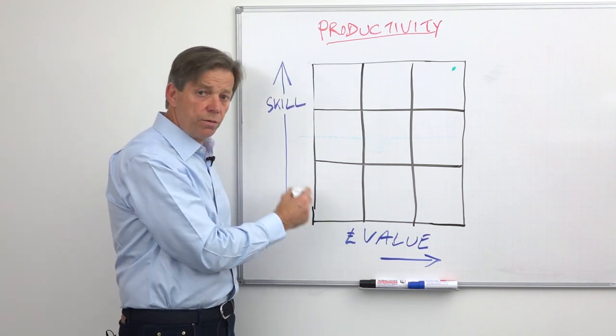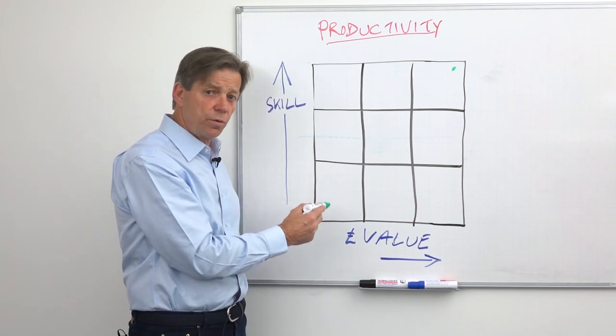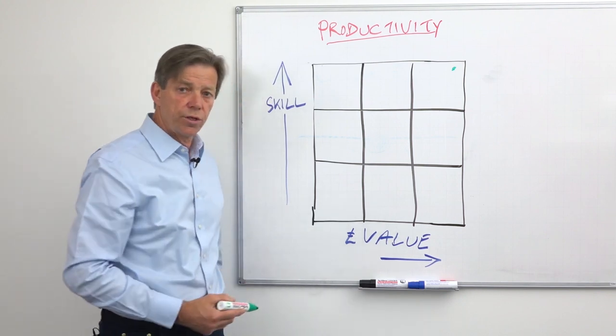In the bottom corner though, low skill, low value stuff, this is where as far as possible automation and/or low cost labor should be doing the task.